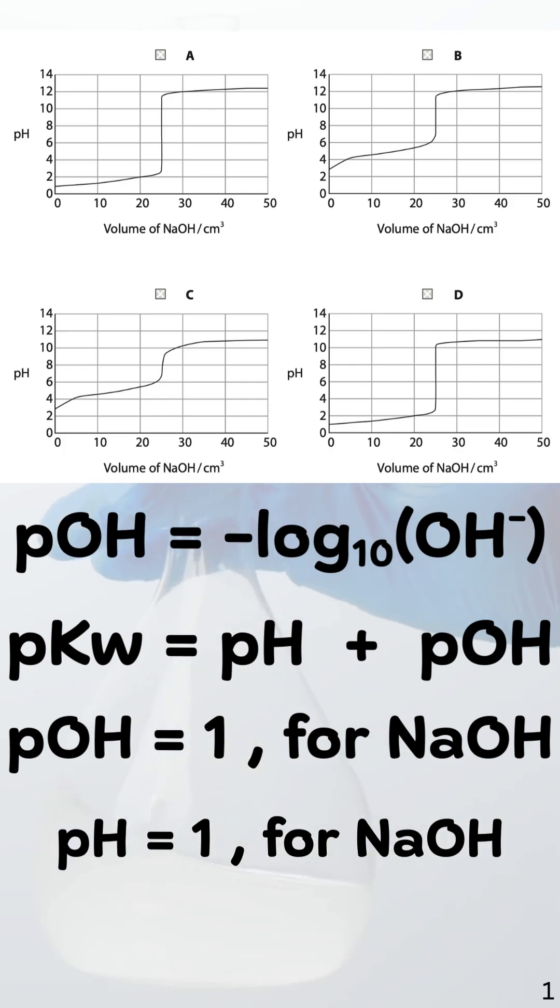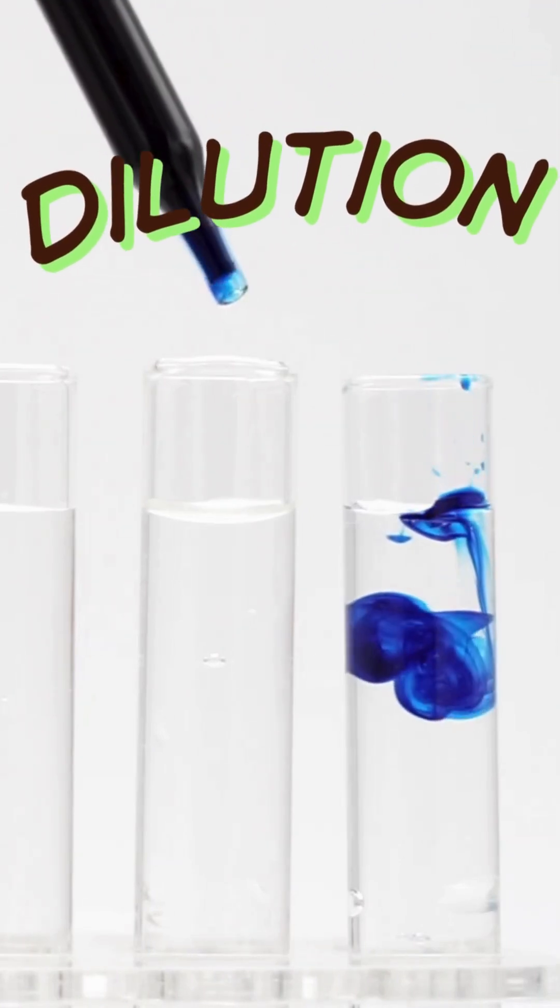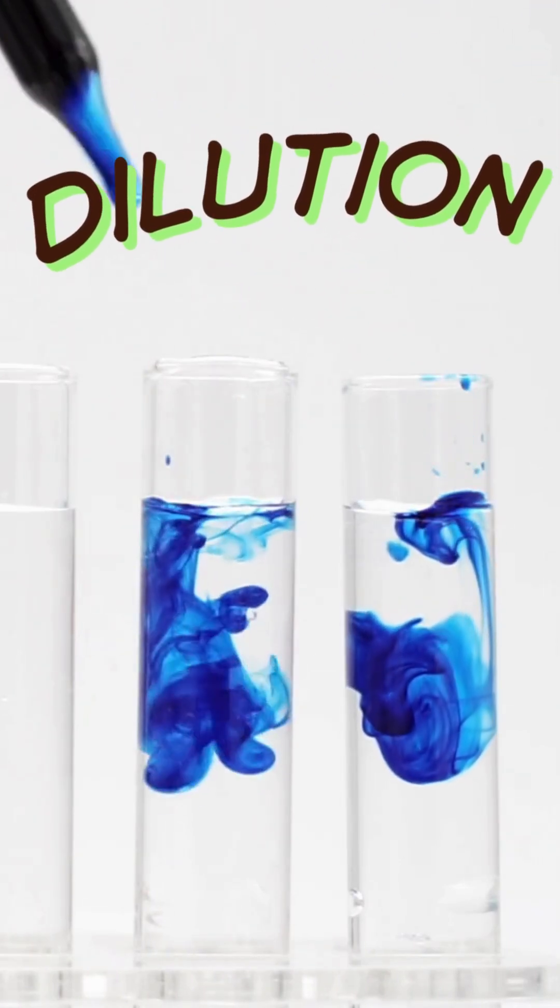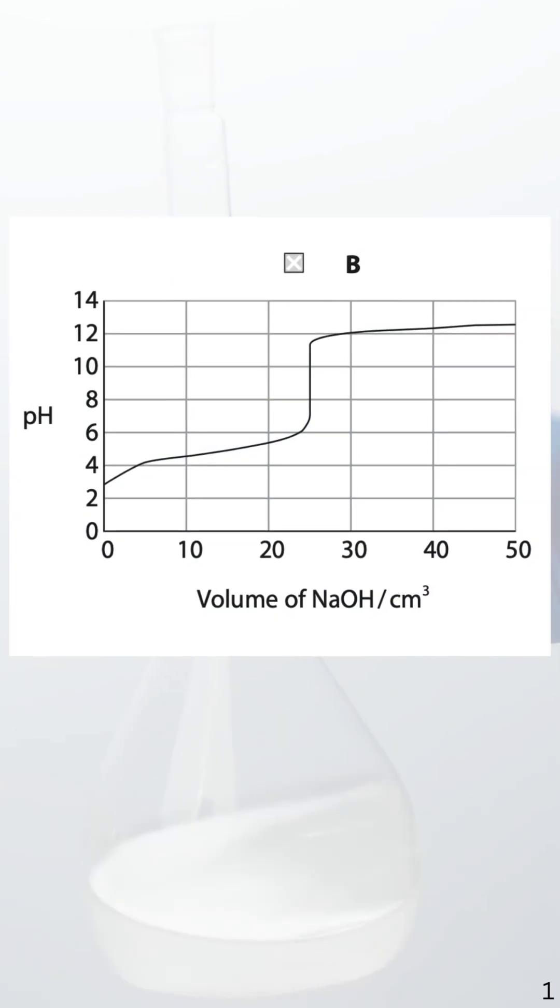0.1 moles per cubic decimeter sodium hydroxide gets diluted in the solution, so the pOH will not be exactly 1, making the pH 13. But the pH should be somewhere closer to 13, not as low as 10 or 11. So now, between B and C, the correct answer is curve B. Now you can double check whether it all makes sense with curve B.